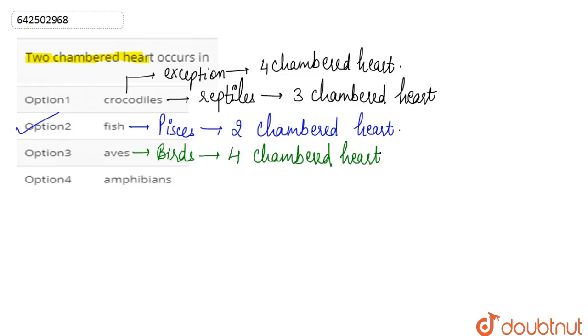By warm-blooded, I mean that they can maintain their constant body temperature as per the environment. It doesn't vary with the environment; it remains constant. So birds have a four-chambered heart.